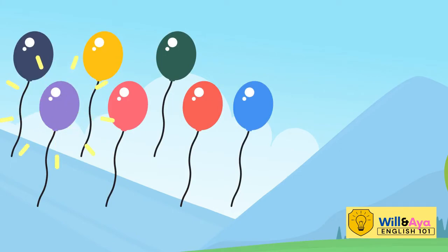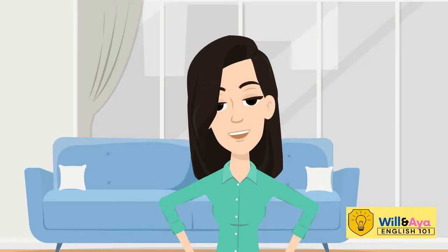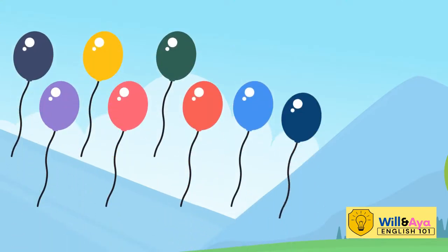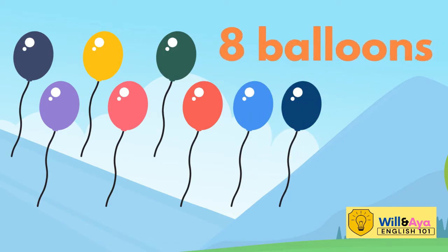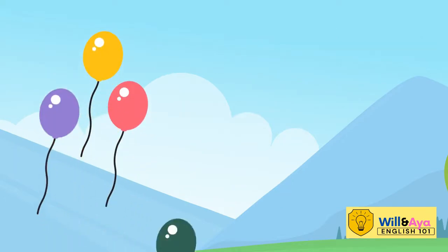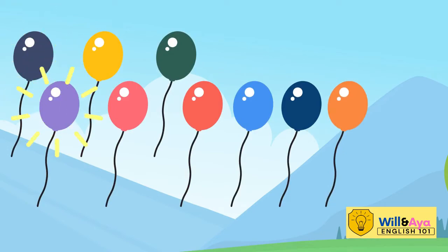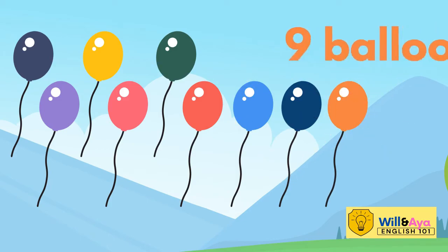One, two, three, four, five, six, seven — there are seven balloons. Let's keep counting. One, two, three, four, five, six, seven, eight — there are eight balloons. One, two, three, four, five, six, seven, eight, nine — there are nine balloons now.